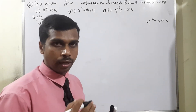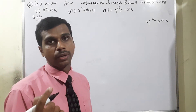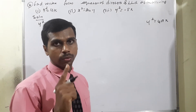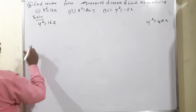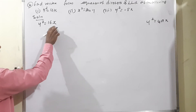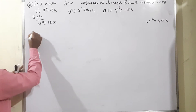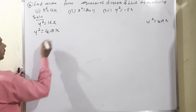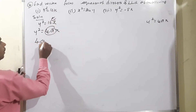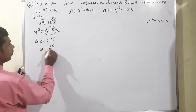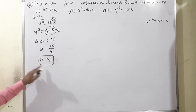The fourth type is downward, where x² = -4ay. Now y² = 16x matches the form y² = 4ax. Therefore 4a = 16, which means a = 16/4, so a = 4.